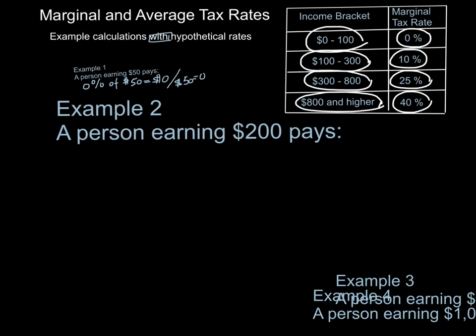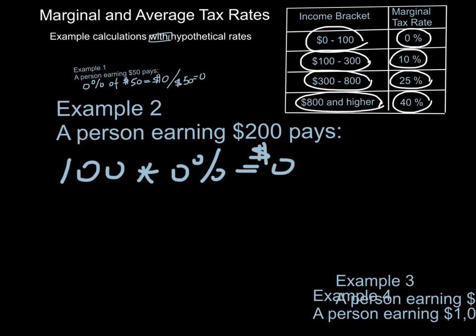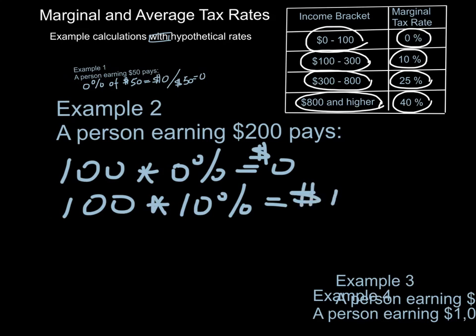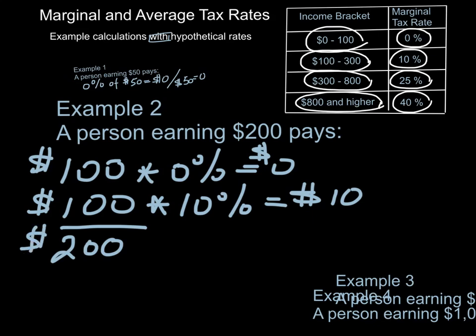Now let's take a look at example two. The person earns two hundred dollars. That person is in the second bracket — the one between a hundred and three hundred dollars — and pays ten percent in marginal tax. But the first one hundred dollars is still taxed at zero percent, because you've got to work your way up the bracket. So the first hundred dollars is zero dollars. Then there's a hundred dollars left, and that's taxed at ten percent — a hundred dollars times ten percent — that's ten dollars. That's the total tax paid by this person.